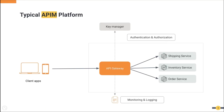Let's take a typical API platform. You have a key manager, gateway, and backend services. The key manager is responsible for authentication and authorization of end users and applications. The gateway sits between clients and backend services, providing services like enforcing authorization, throttling, and more. Even though the current focus is around API security, we can't stop there — we need to consider the full solution. There are many IAM capabilities required to build a secure API platform.